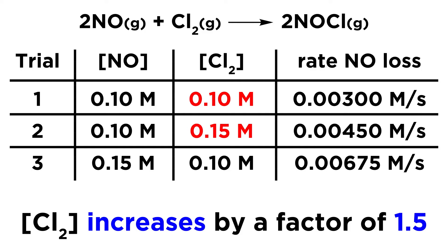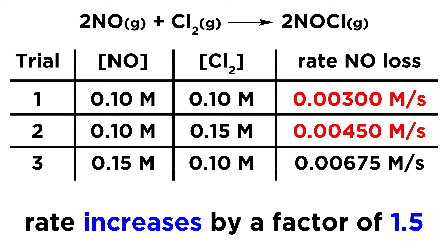However, the concentration of Cl2 increases from 0.10 to 0.15. So that is a factor of 1.5. So for the second trial, the Cl2 concentration is a time and a half that for trial 1. Then we look at the rate of NO consumption and that goes from 0.003 to 0.0045. So the rate also increases by a factor of 1.5.